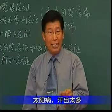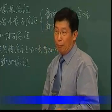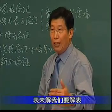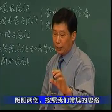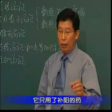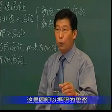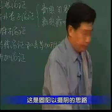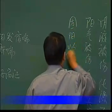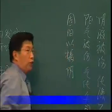因此我们分析这一条，它的基本病机是：太阳病汗出太多，阴阳两伤，表未解。在这种情况下，表未解我们要解表，阴阳两伤按照我们常规的思路就应当阴阳双补，但是张仲景用的是桂枝加附子汤，他只用了补阳的药，没有用补阴的药。这是一种什么样的治疗思路呢？这是固阳以摄阴的思路。